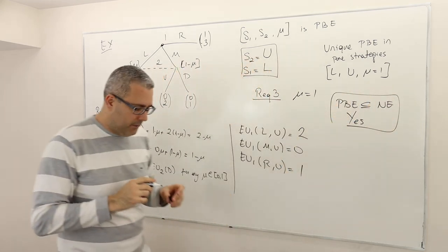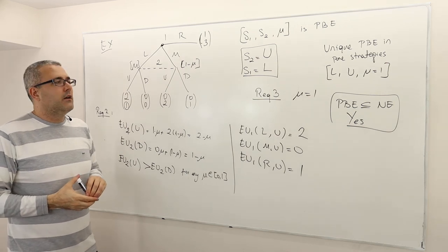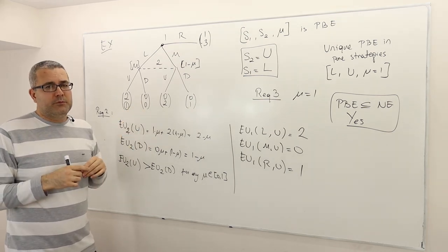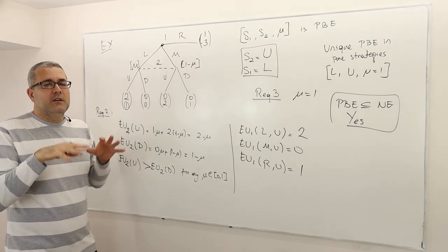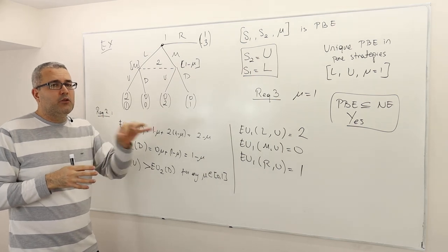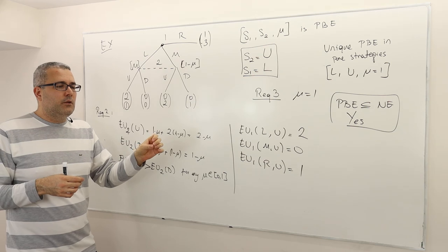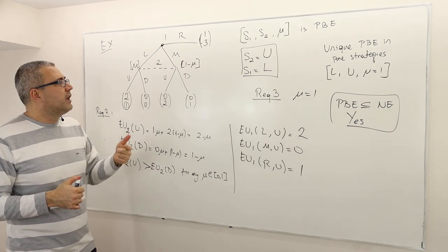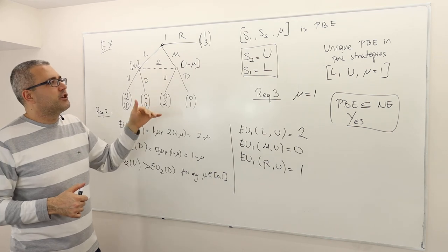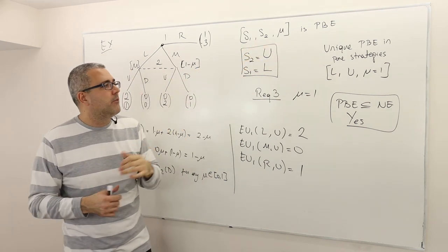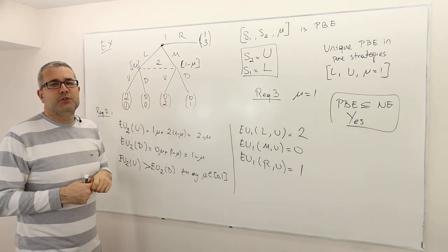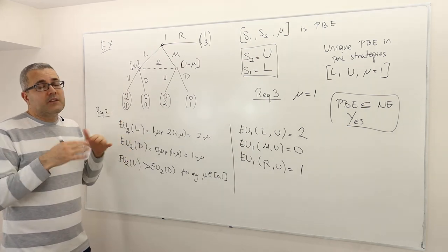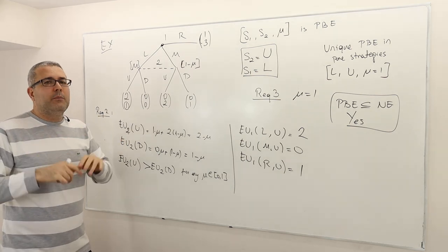What does that mean? That means if you want to find PBE, one approach you can follow is to find the Nash equilibria by drawing the normal form representation. Then, from this set of Nash equilibria, the PBE is going to be one of them. You can use a trial-and-error method and see which profiles are PBE by applying sequential rationality. You have to come up with the belief system μ as well. Alternatively, you can follow the approach of starting with requirement one, moving to requirement two, then requirements three and four, coming back to requirement two if needed depending on the problem.